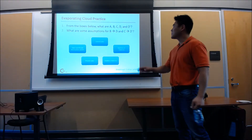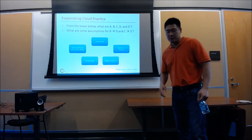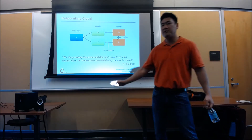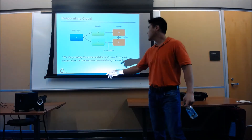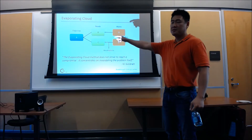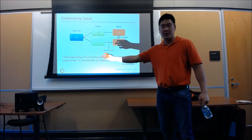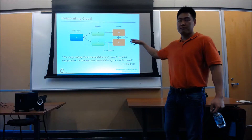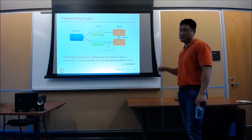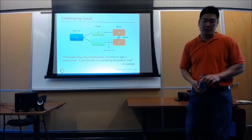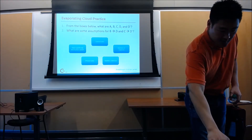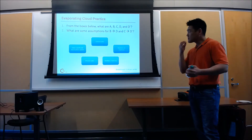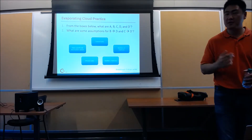I have five boxes here, right? Remember the structure? The objective is A. On one branch the need is B. The other branch need is C. And then I have D and D prime for the actions. So from what we have here, which one do you think is the objective?